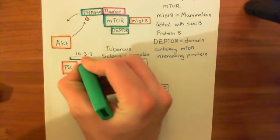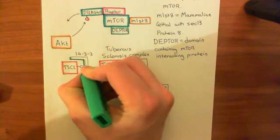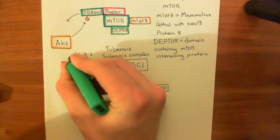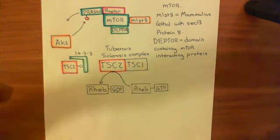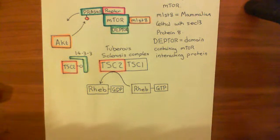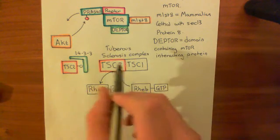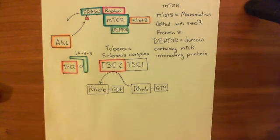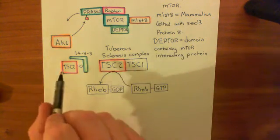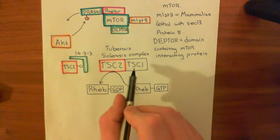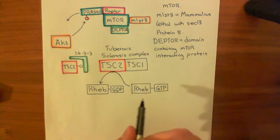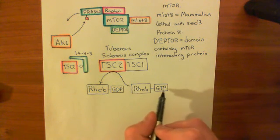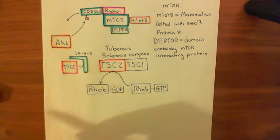14-3-3 comes and binds to the tuberous sclerosis complex with this phosphate group on, and now TSC2 cannot bind with TSC1, so you can't form the tuberous sclerosis complex. When TSC2 is not bound with TSC1, it doesn't catalyze the hydrolysis of the GTP bound to the REB protein.